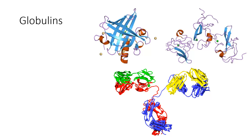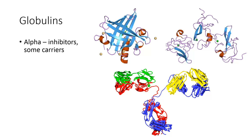The second kind of protein found in plasma is a large family called the globulins. The globulins can be broken down into three different subfamilies. The first being the alpha globulins, which are largely inhibitor proteins — things like antitrypsin. There are also some alpha globulins that act as carriers, much like albumin carrying lipids; they help transport other molecules through the blood.